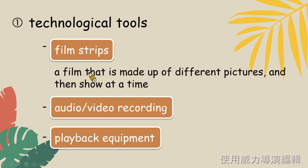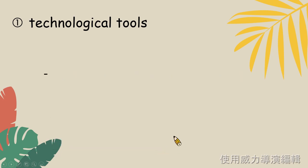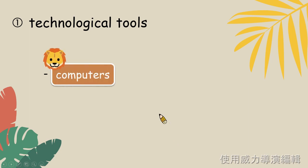Film strips特別說的是 a film that is made up of different pictures shown at a time. 就像我們現在用evercam錄製一樣,我們將很多圖片放在一個PowerPoint檔的時候,我們可以在上課的時候錄成影片一次展現,這就成為film strips. 假設我們製作了一個聲音檔或者是影片檔,在課堂上重複播放的話,這樣就可以增加同學對於教學內容的熟悉度。 The last but most important is the computer.